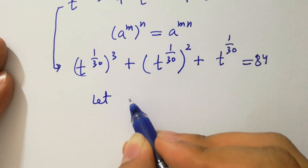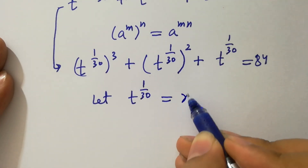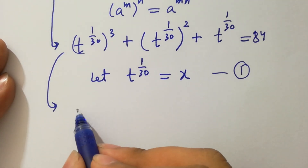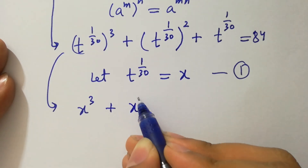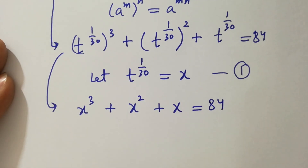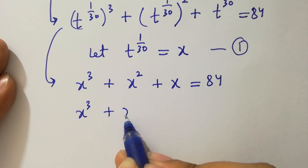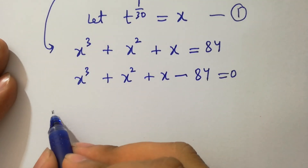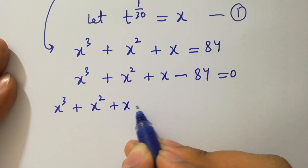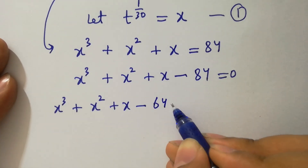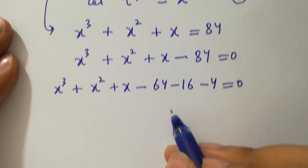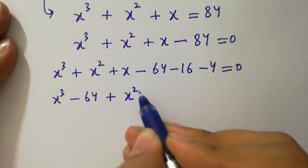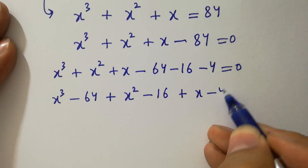Let's suppose t to the power 1 over 30 equals x — call this the first equation. Then we have x cubed plus x squared plus x equal to 84, which gives x cubed plus x squared plus x minus 84 equal to 0. This factors as x cubed minus 64 plus x squared minus 16 plus x minus 4 equal to 0.